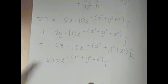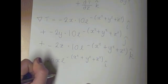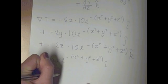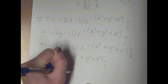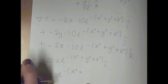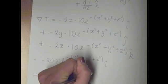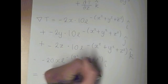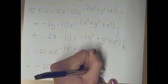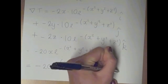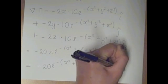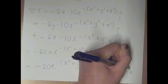So then when you put all these together, you get minus 20e to the minus (x squared plus y squared plus z squared) times by your xi plus yj plus zk.